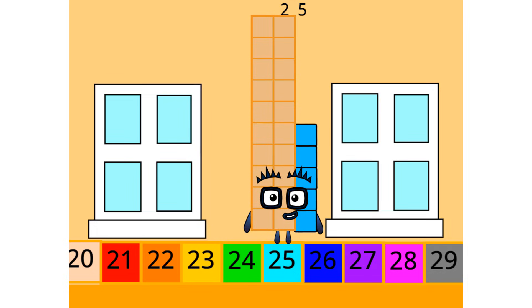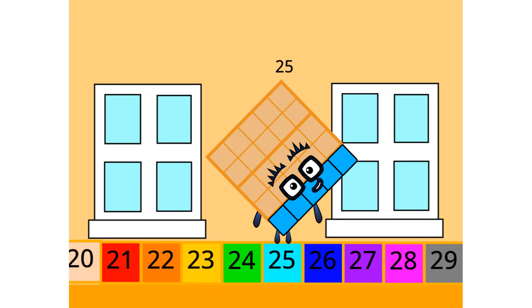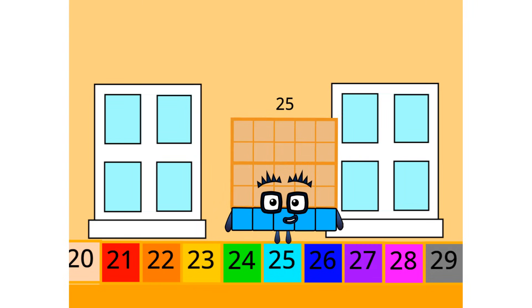If you choose me, correct you are. Hello lovely numbers. I am 25. I am a really big square. Here is proof. Do you know who comes after me?